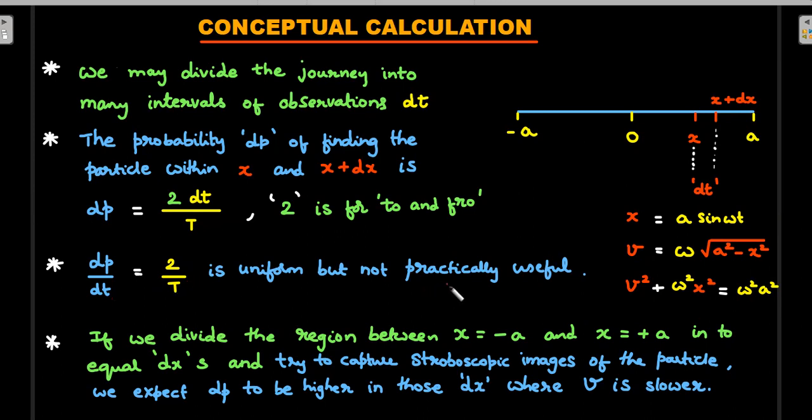So if the problem had asked the probability distribution function over time, it would have been a uniform function, but it is not practically useful. The reason is very simple. Whenever you are dealing with any probability distribution and you want to practically show that on any pictorial or graphical variations, you set up a camera and try to take snapshots of the particle randomly at different positions, which means you are actually dividing these intervals into equal space intervals of dx's and trying to locate the particle.